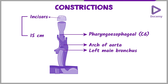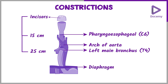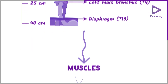The second constriction is at the level of T4, or a distance of 25 cm from the incisors. The third constriction is by the diaphragm, which is at the level of T10, or at a distance of 40 cm from the incisors.